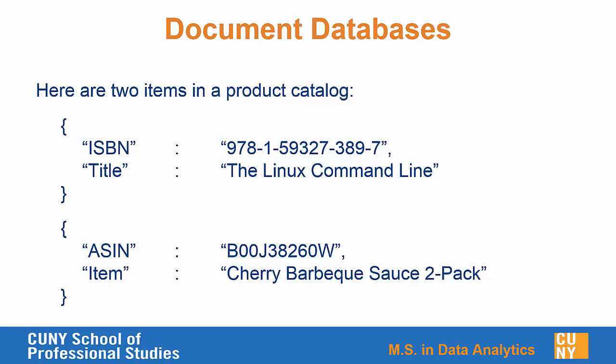Here are a couple more examples of documents that might be in a product catalog database. While still very simple, they have an identification number and a title for the item. The rows don't have the same data structures — in the first case we have an ISBN, in the second case we have ASIN instead. In the first case we have 'title', in the second case we have 'item'. So we're not required to have the same schema for each document.